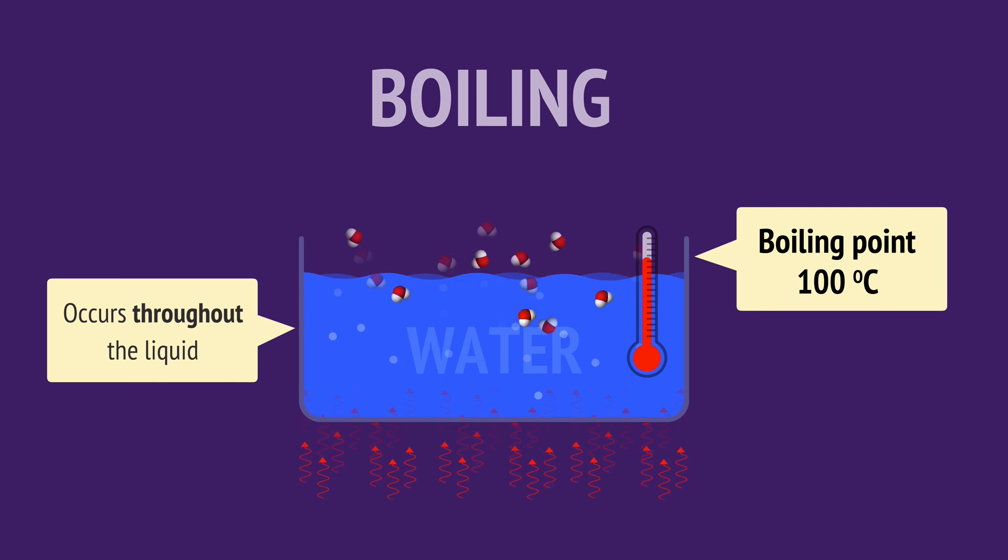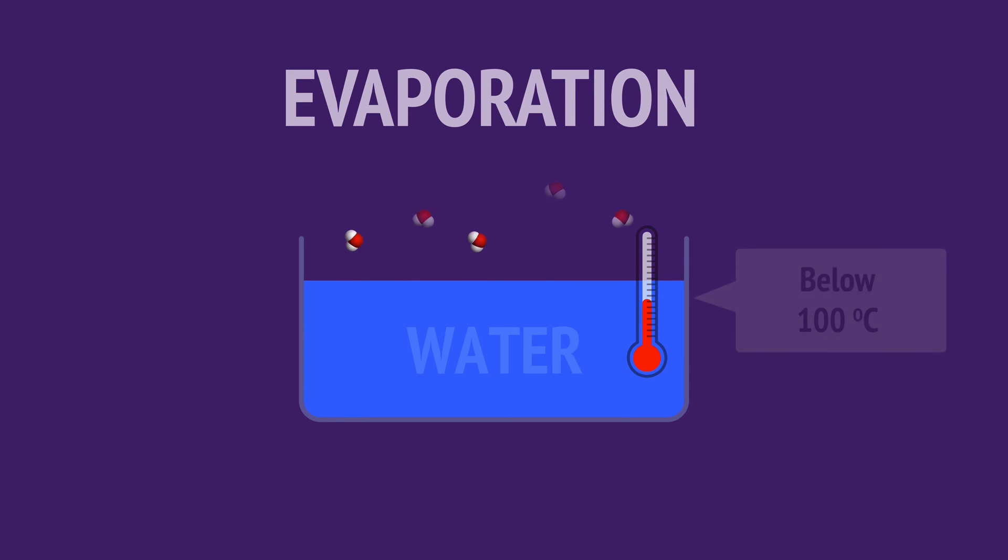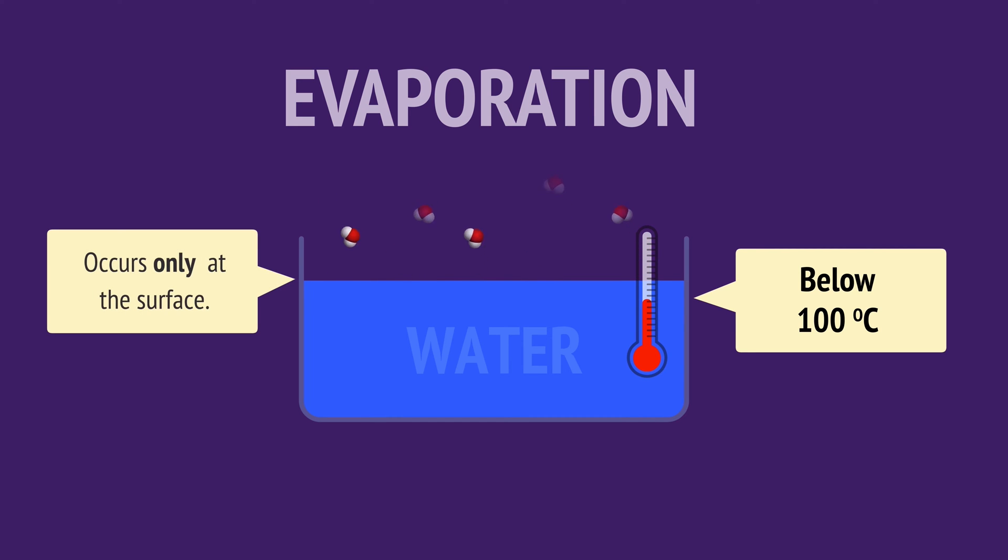But vaporization can also occur at temperatures lower than the boiling point. We call this evaporation. This is when particles at the surface absorb enough heat energy from the surroundings to break free of the attractive forces. Unlike boiling, evaporation is a slow process that occurs only at the surface.